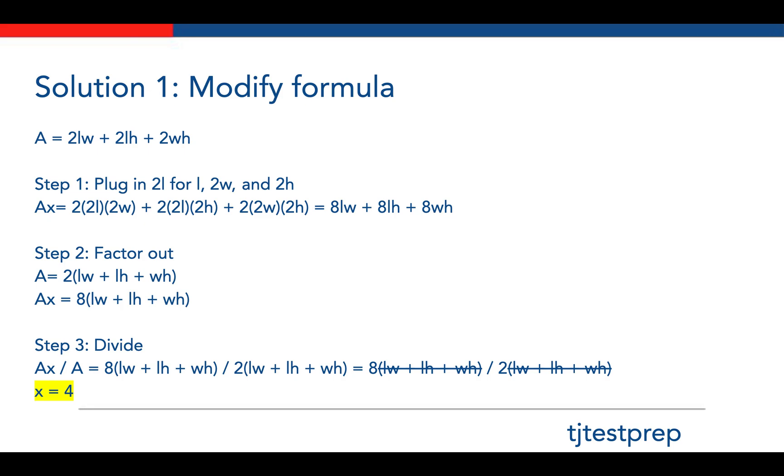Step two is to factor it out. Hopefully you'll see here that in both formulas you have LW plus LH plus WH. What you can do is factor that out, and you'll get A equals 2 times that amount, and AX equals 8 times that amount.